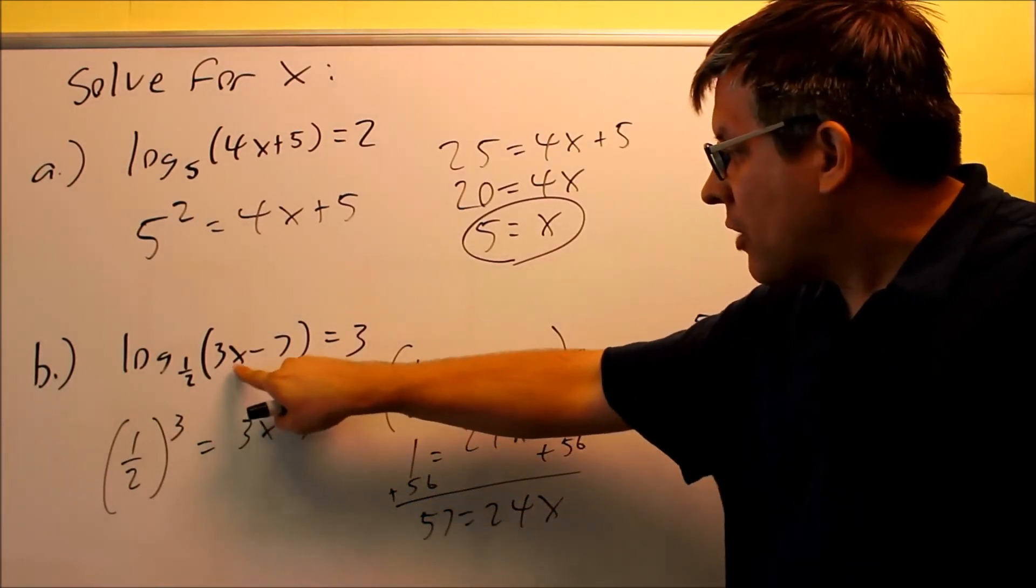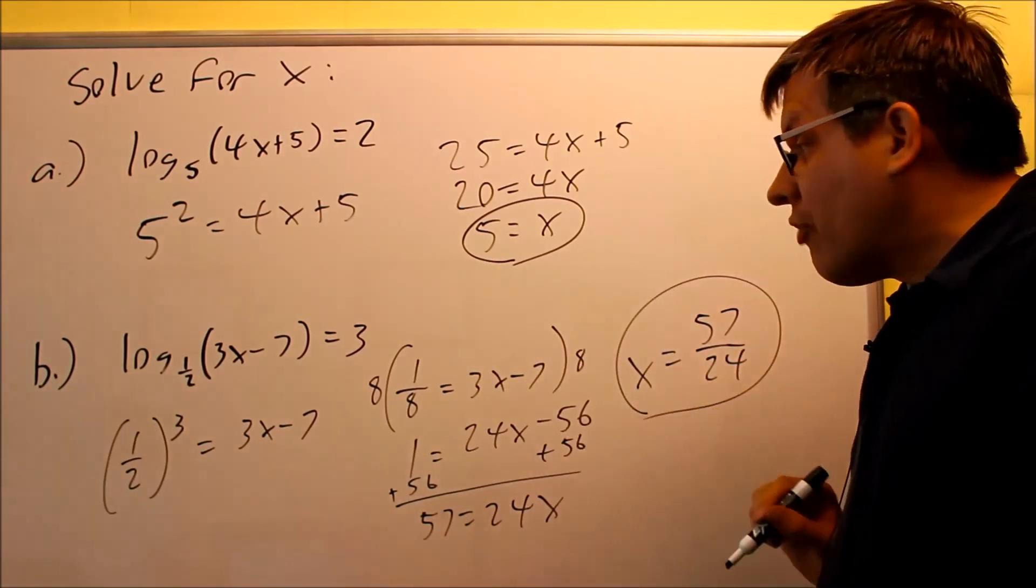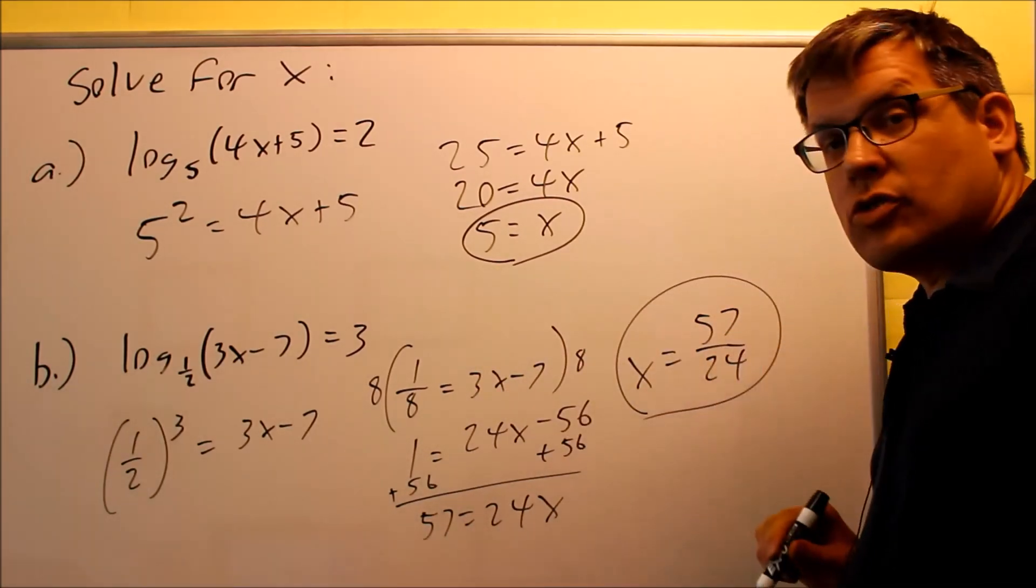And so if I multiply by 3, that's still going to work there, so it means that this would be your final answer for that one, 57 over 24.